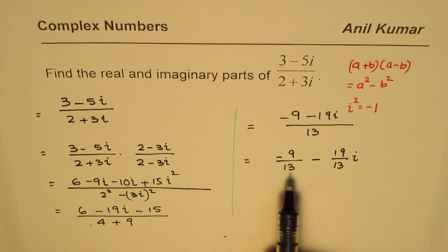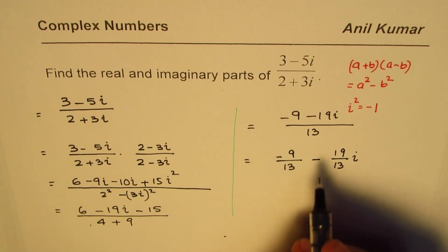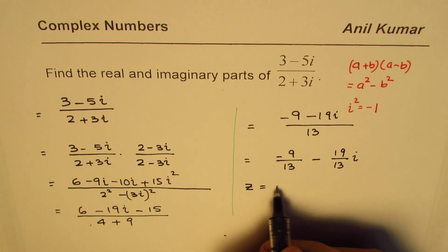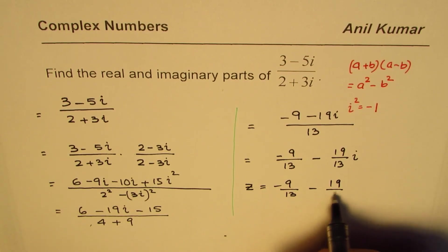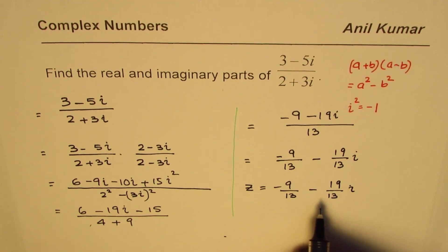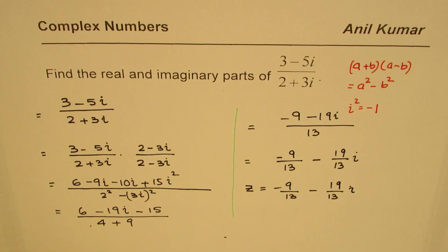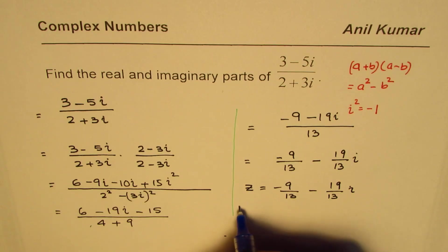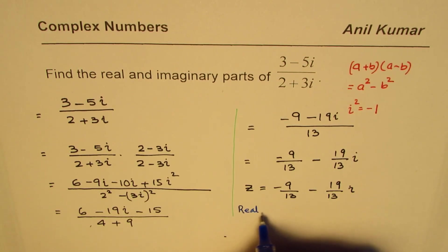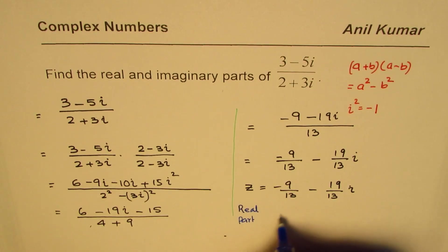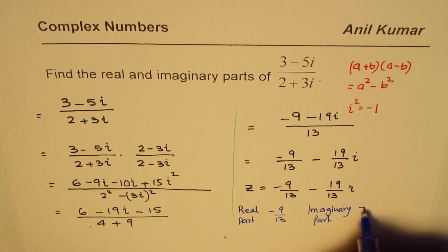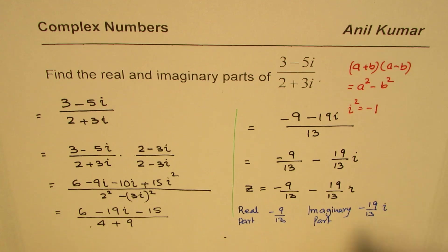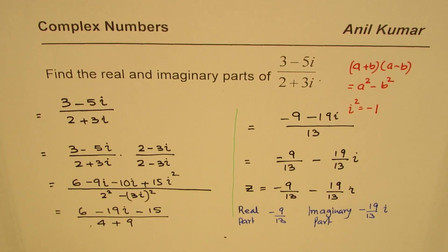We have now separated the real and imaginary parts. We write the complex number z equals minus 9 over 13 minus 19 over 13 i. The real part is minus 9 over 13, and the imaginary part is minus 19 over 13.